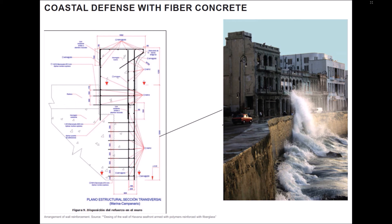Cuba, as a country totally surrounded by water and frequently hit by inclement weather, needs this type of structure that we present. Concrete and steel are the construction materials most used worldwide in this type of structure. However, the disadvantages of their use in such aggressive environments increase even more when the problem of steel corrosion continues to be an unknown to be solved.